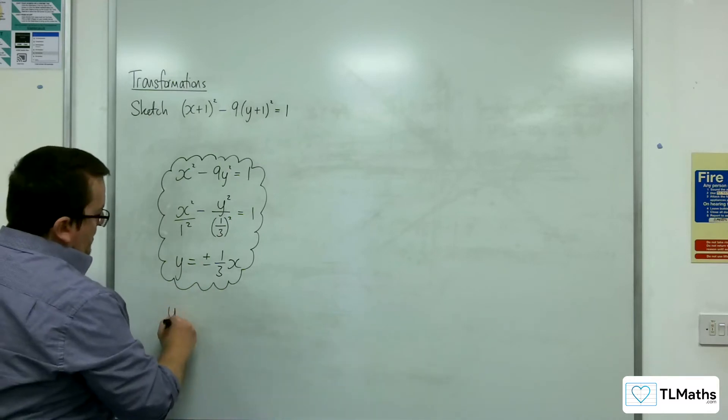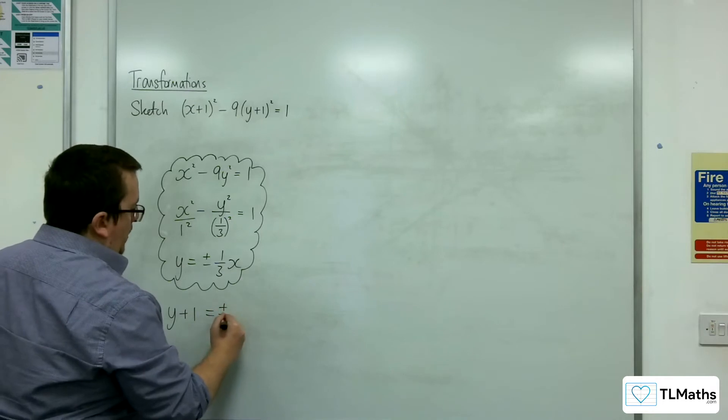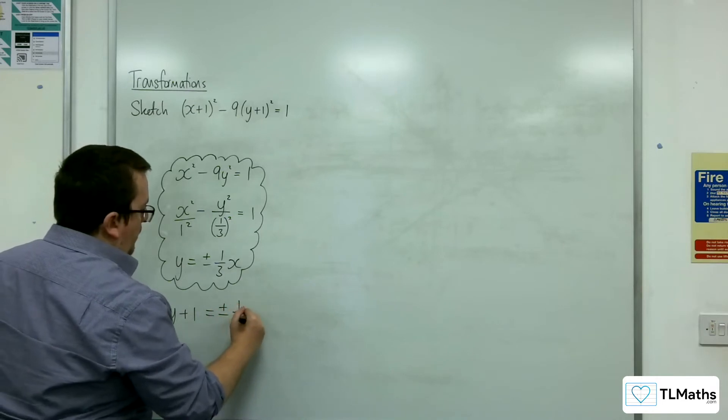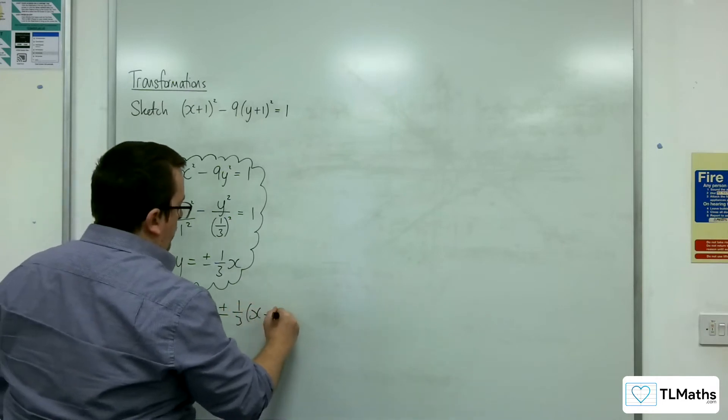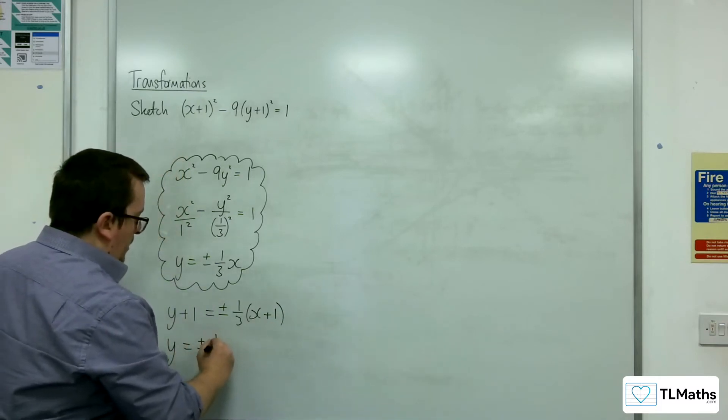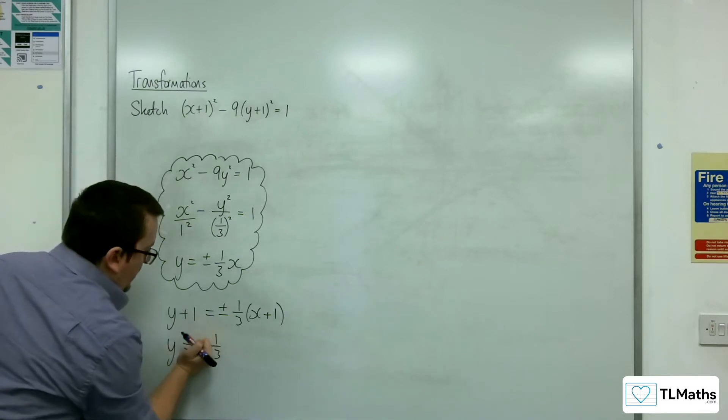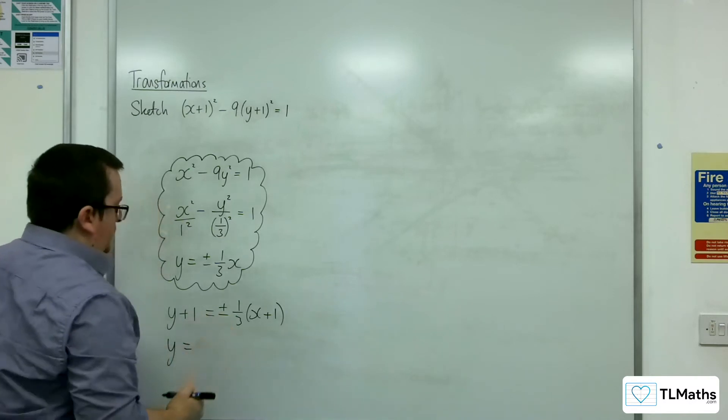So the equations of the asymptotes would become y+1 = ±(1/3)(x+1). So this would be y = ±1/3. Well, if I write it out, so the two equations.